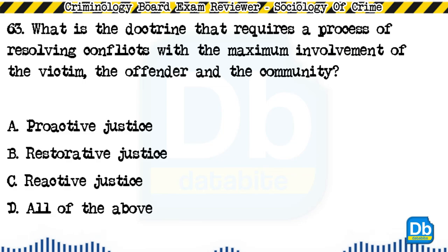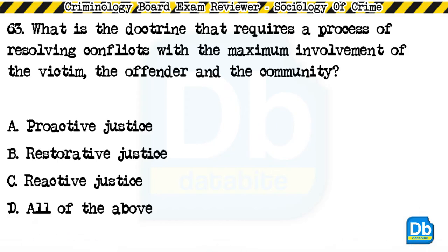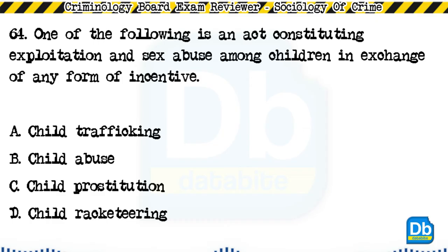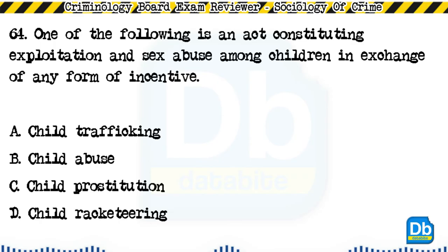Question 63: What is the doctrine that requires a process of resolving conflicts with the maximum involvement of the victim, the offender, and the community? a) proactive justice, b) restorative justice, c) reactive justice, d) all of the above. The answer is B, restorative justice. Question 64: One of the following is an act constituting exploitation and sex abuse among children in exchange for any form of incentive: a) child trafficking, b) child abuse, c) child prostitution, d) child racketeering. The answer is C, child prostitution.